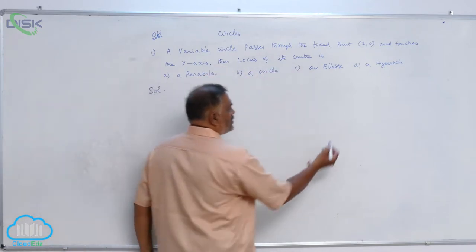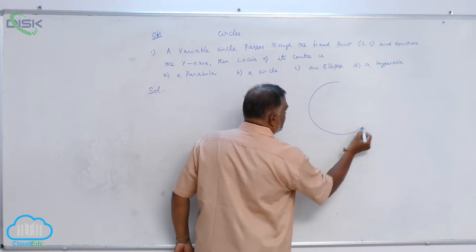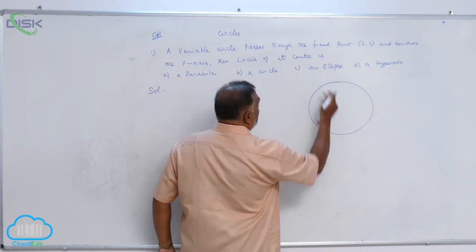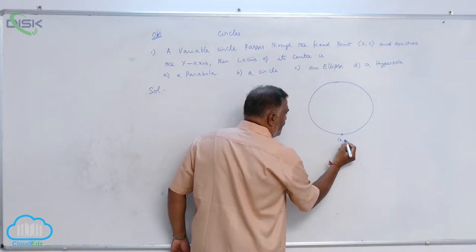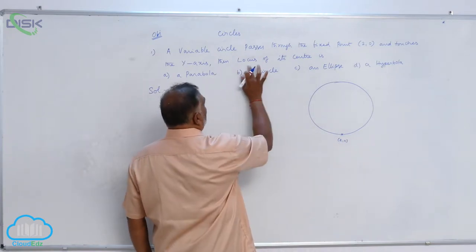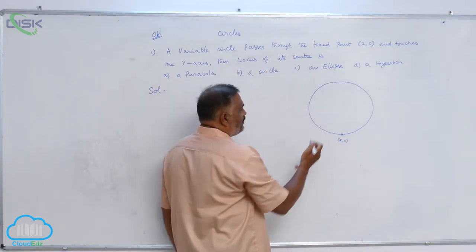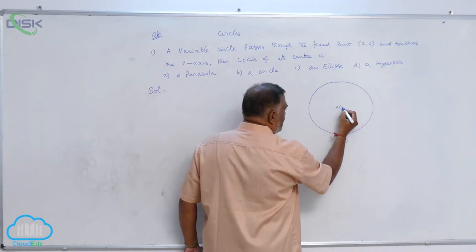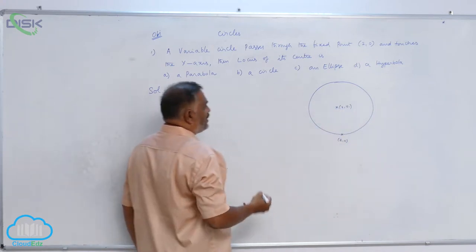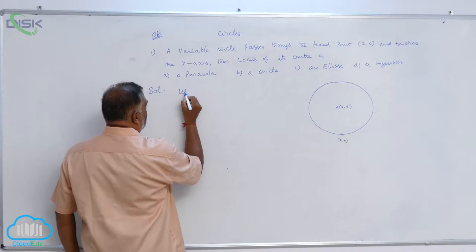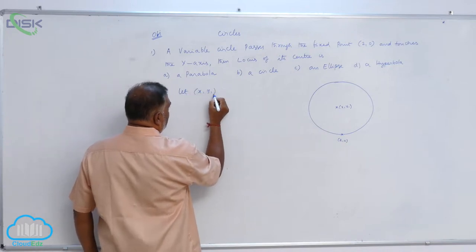Now let us draw a diagram. Here circle passes through the point (2, 0). Since we require locus of the center of the circle, assume that center may be (x1, y1). So let (x1, y1) be the center.